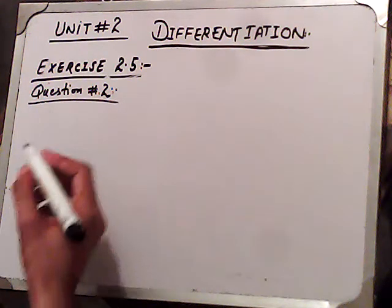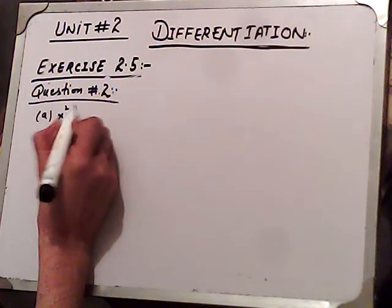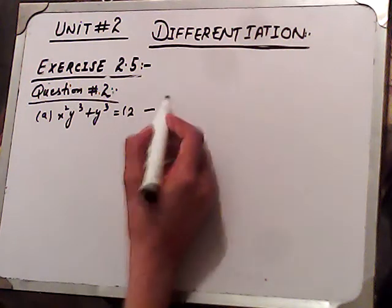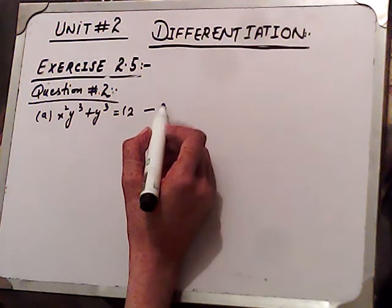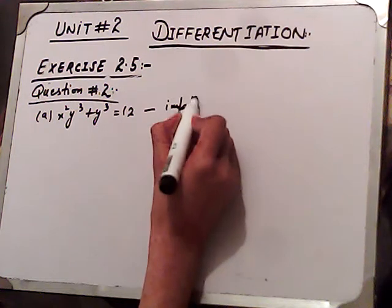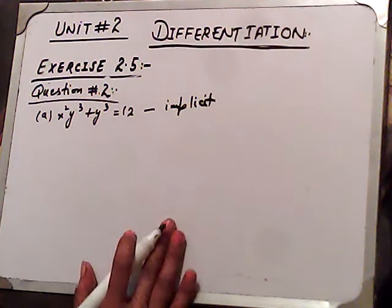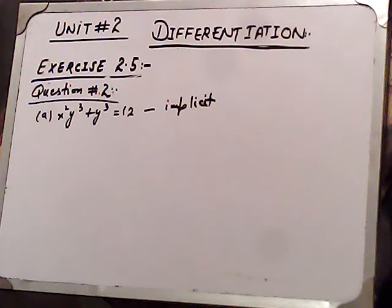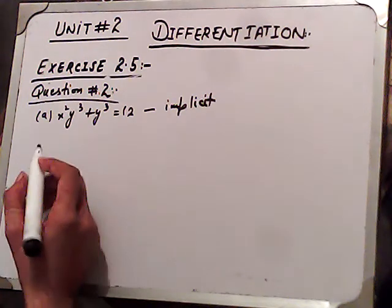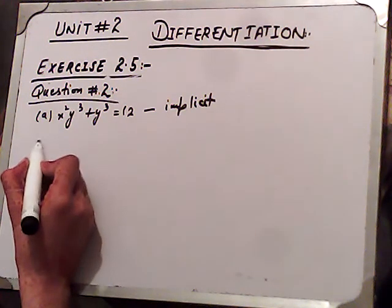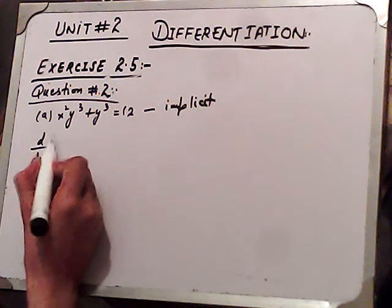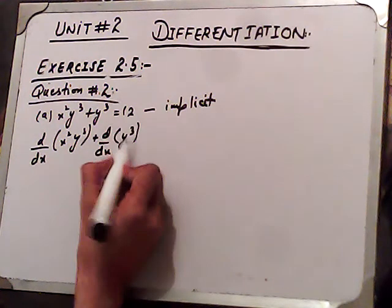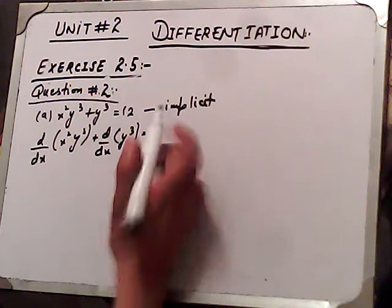Part A: x squared y cubed plus y cubed is equal to 12. This is what we have to differentiate in implicit form. First, I will arrange this question in terms of x's value. Let's find d/dx of x squared y cubed plus y cubed equals 12 — the derivative of a constant is zero.